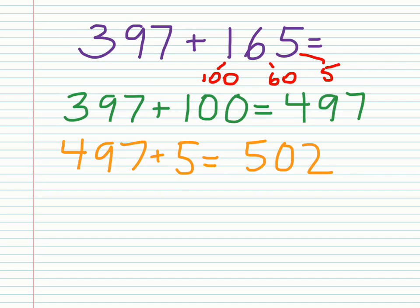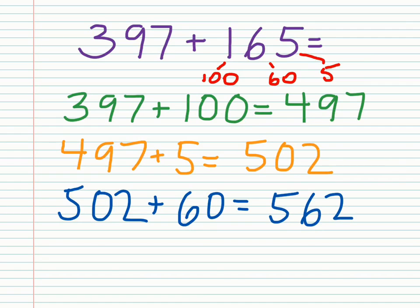So I'm adding the 60 as the last bit, which will give me 562 for the answer. And you can see here are the three parts that I added: 100, 5, and 60. I broke it apart, but this is actually an example where friendly numbers, just like before, would actually be the best way to do this.